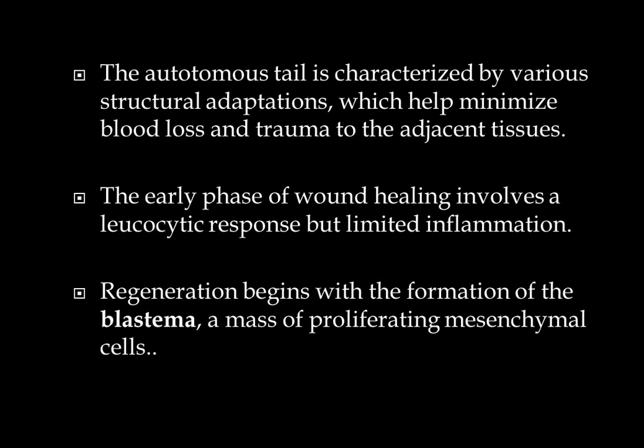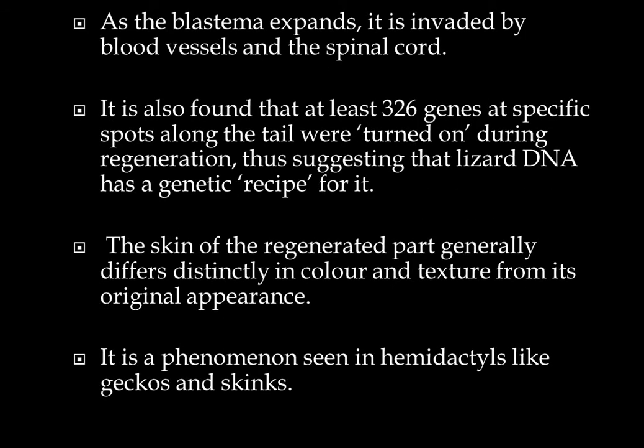The autotomous tail is characterized by various structural adaptations which help minimize blood loss and trauma to adjacent tissues. The early phase of wound healing involves a leukocytic response but is limited to inflammation. Regeneration begins with the formation of a blastema, which is a mass of proliferating mesenchymal cells possessing capacity to develop the lost part. As the blastema expands it is invaded by blood vessels and the spinal cord. It is also found that at least 326 genes at a specific spot along the tail are turned on during the regeneration process, meaning the recipe for synthesis of that part is hidden in that DNA segment.